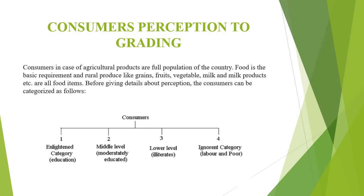Consumers' perception to grading is categorized as follows: enlightened category, i.e. educated; middle level, i.e. moderately educated; lower level, i.e. illiterate; and ignorant category, i.e. labor and poor.